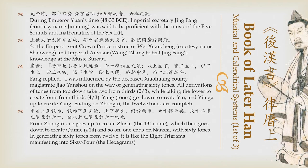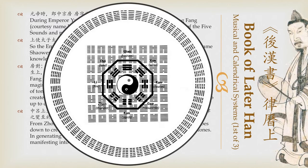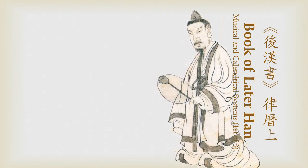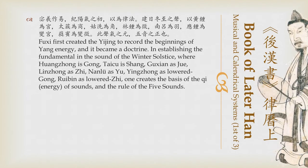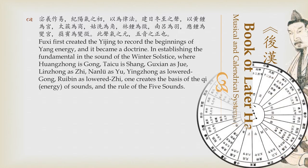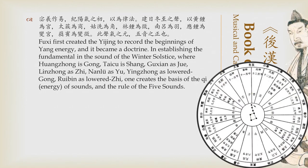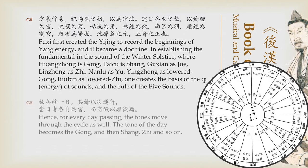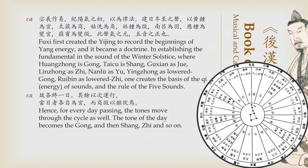One ends up on nan shi with 60 tones. In generating 60 tones from twelve, it is like the eight trigrams manifesting into 64 hexagrams. Fu Xi first created the yijin to record the beginnings of yang energy, and it became a doctrine. In establishing the fundamental in the sound of the winter solstice, where Huang Zhong is gong, Tai Chu is then shang, Wu Xian as jue, Lin Zhong as zhi, Nan Lu as yu, Ying Zhong is then lowered gong, and Ruibin is then lowered zhi. This is the basis of the qi, or the energy of sounds, and hence is the rule of the five primordial tones. For everyday passing, the tones move through the cycle as well — the tone of one day becomes the gong, shang on the next day, zhi on the one after, and so on.